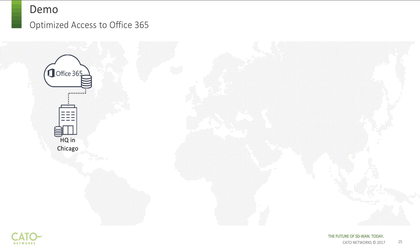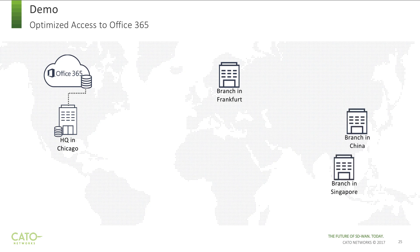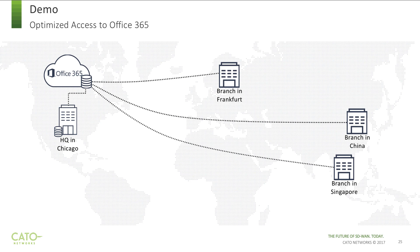In our demo we will show a typical customer environment with headquarters in North America and three remote branches in Germany, China and Singapore. We will show users in the branches downloading a large file from SharePoint in our Office 365 instance over the public internet and then across Cato cloud.